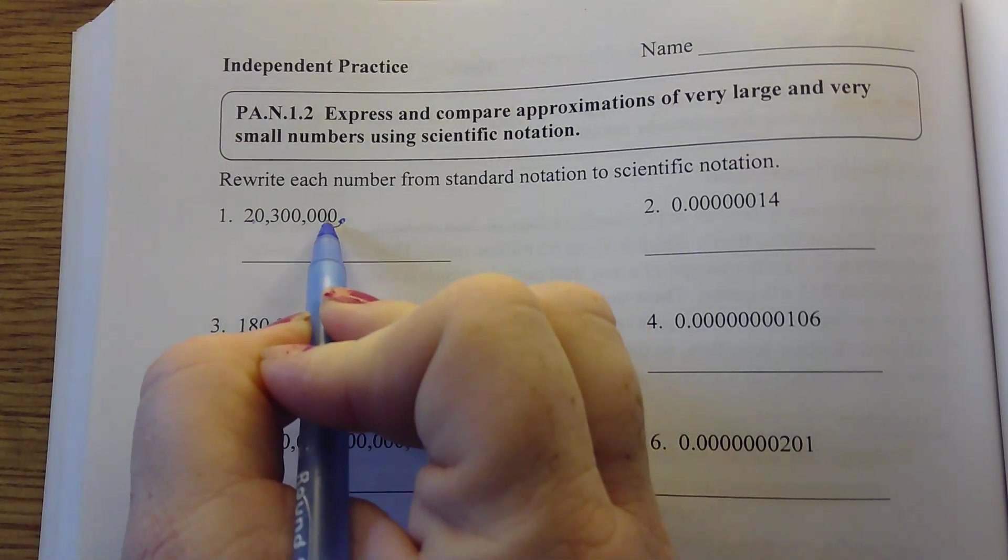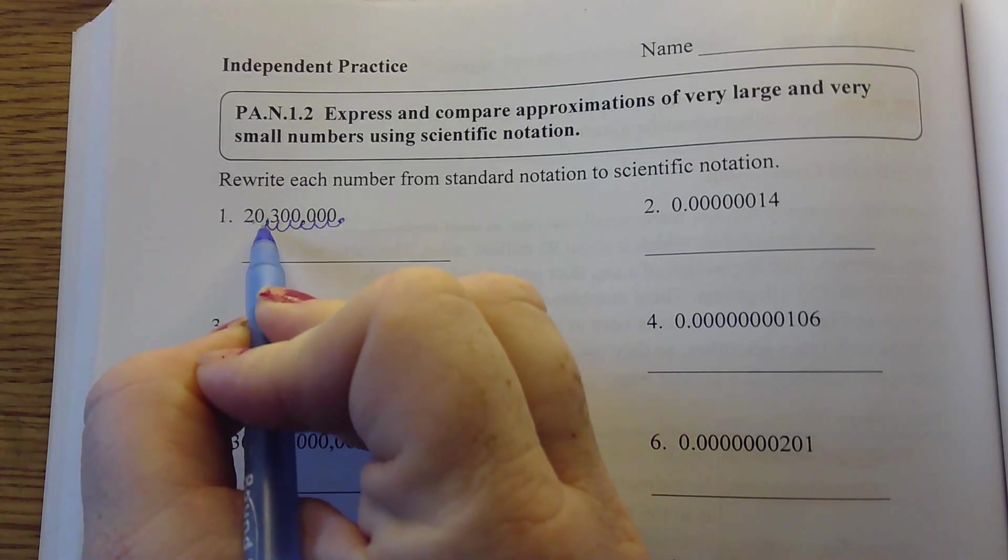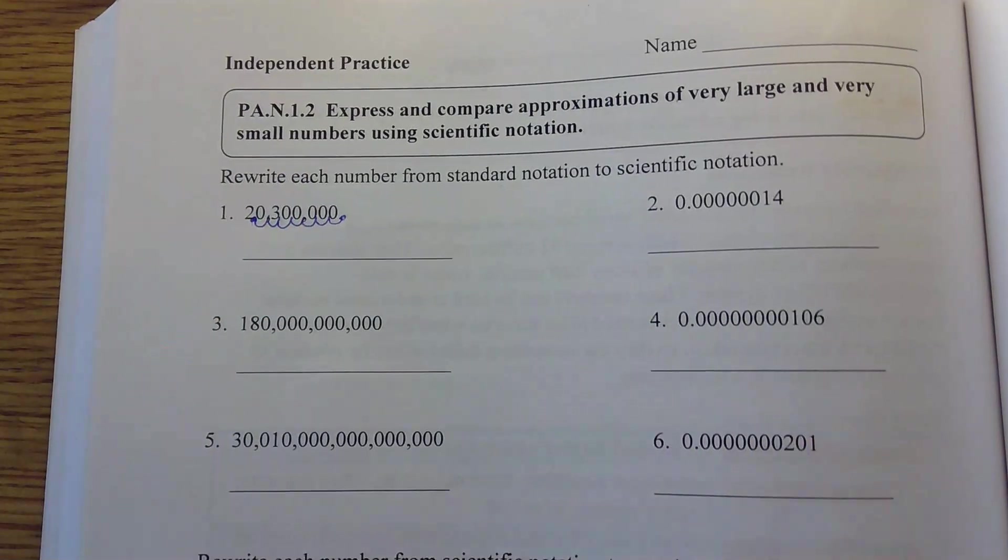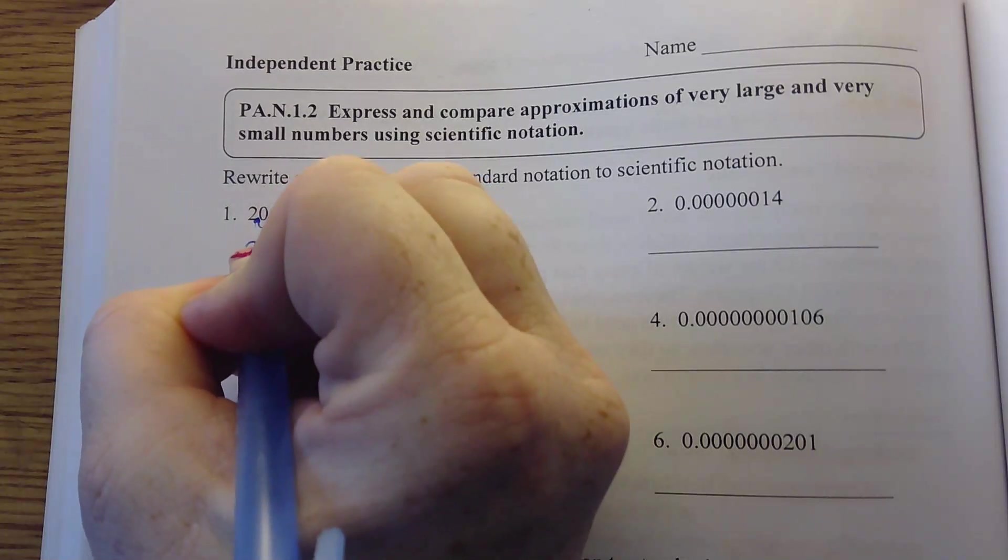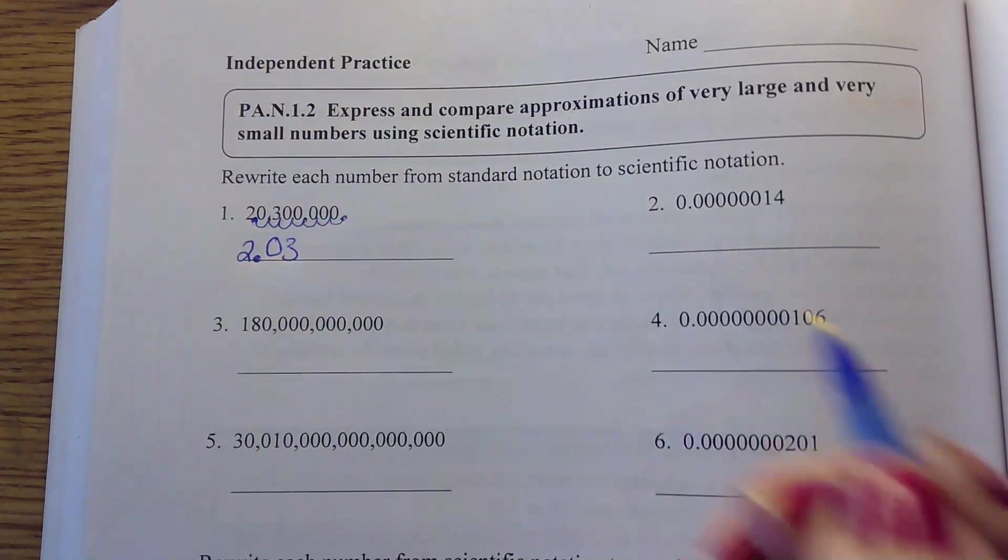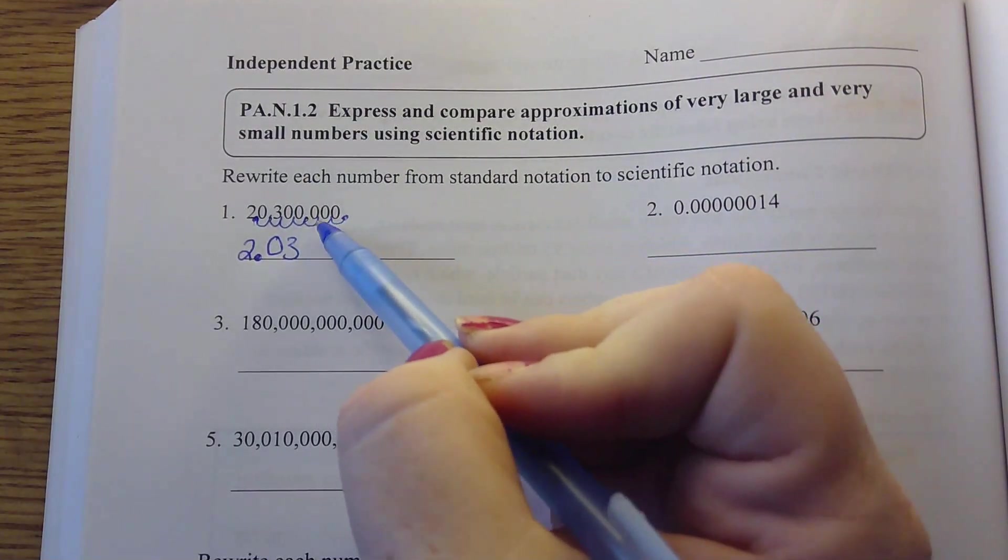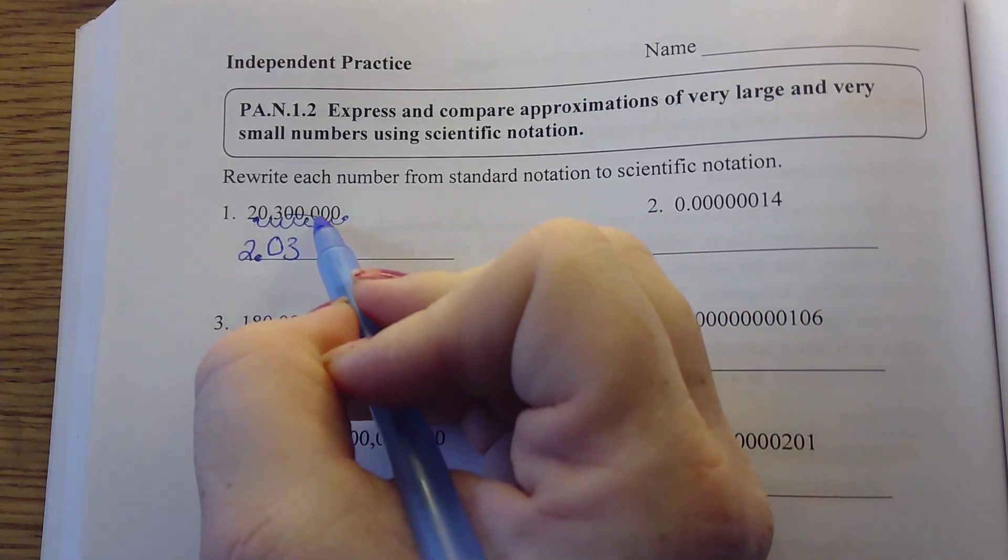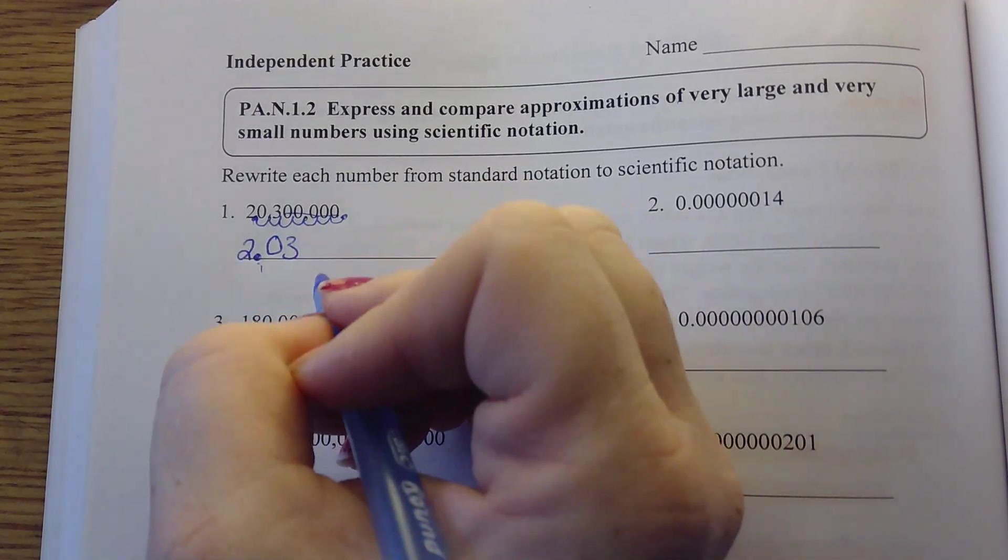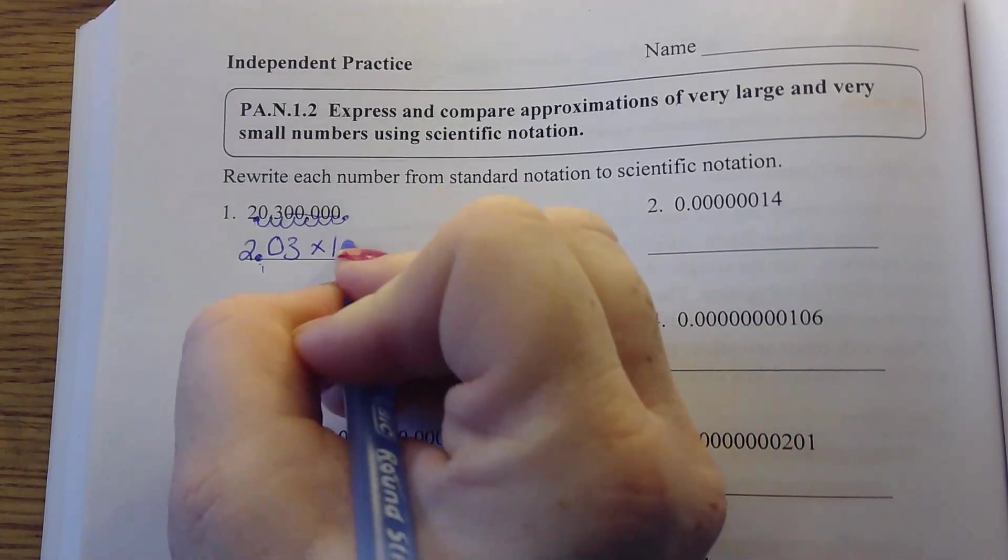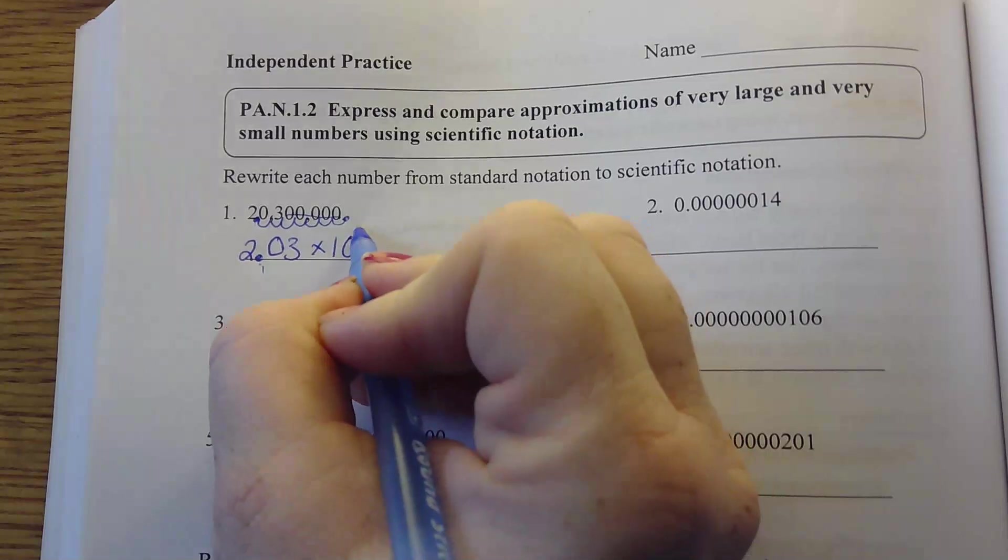So we've got 1, 2, 3, 4, 5, 6, 7 times. We moved it over 7, so we're going to go 2.03. If there were other numbers here other than zero, we would have to keep going, but these are all zeros, so I don't have to include them. 2.03 times 10 to the 7th power.